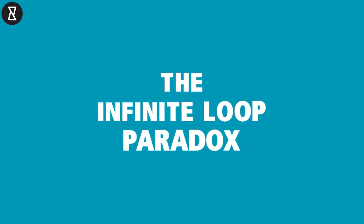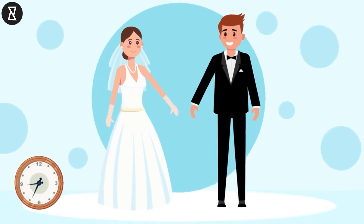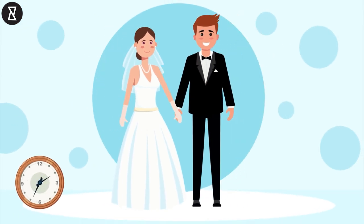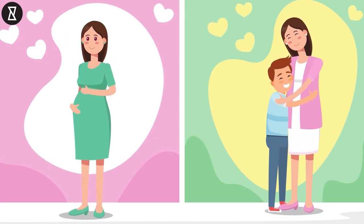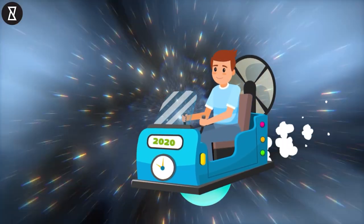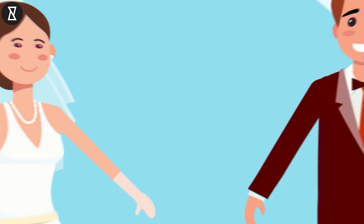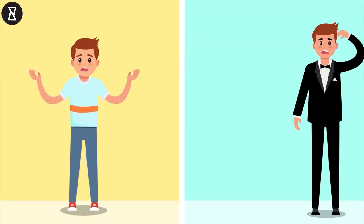The infinite loop paradox. A man travels back to the past and marries a woman. After that he returns to the present. The woman gets pregnant and now has a son. Years later that son becomes the time traveler who goes into the past and marries the woman. So now who is the son and who is the father?